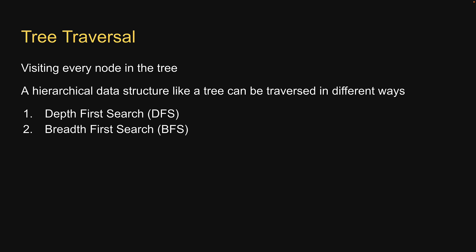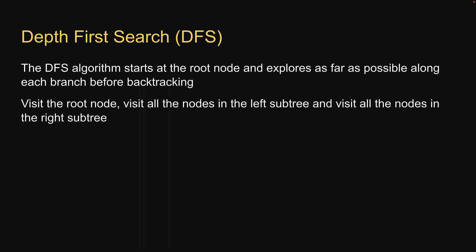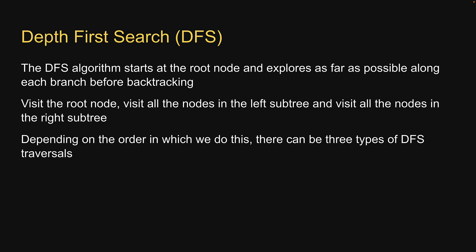In this video, let's focus on depth-first search and learn about breadth-first search in the next video. The DFS algorithm starts at the root node and explores as far as possible along each branch before backtracking. So we need to visit the root node, visit all the nodes in the left subtree, and visit all the nodes in the right subtree. Depending on the order in which we do this, there can be three types of DFS traversals: pre-order, in-order, and post-order.